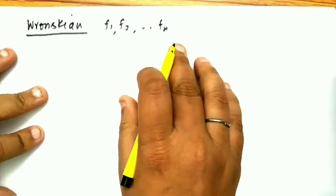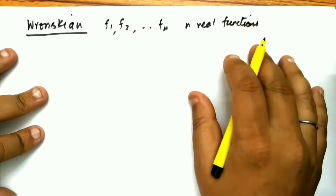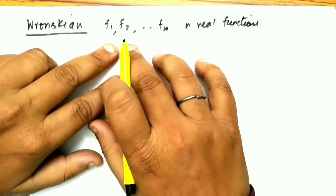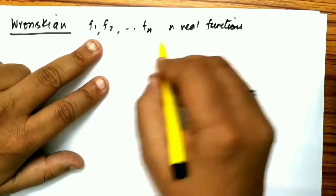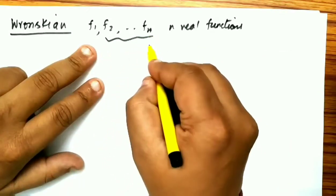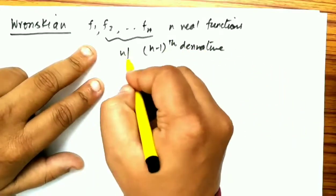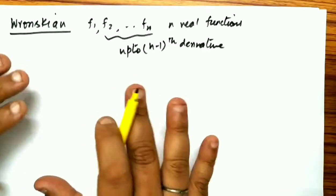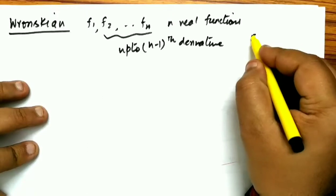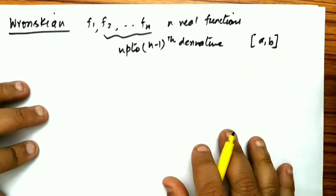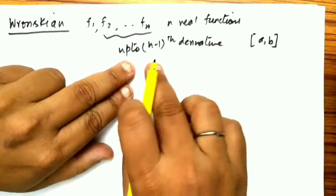Let F1, F2, and so on up to Fn be n real functions. The important condition is that they all have up to the (n−1)th derivative. We need these derivatives in the form of the Wronskian determinant, and since we are talking about real functions, this is defined on a closed interval [a, b].